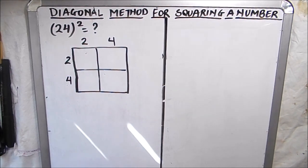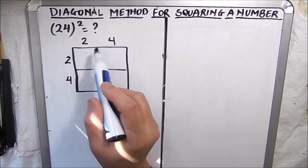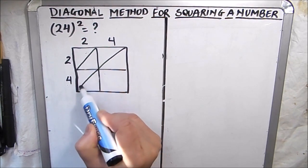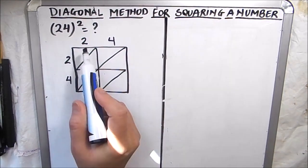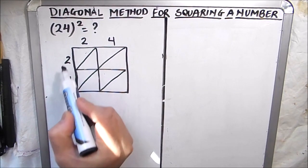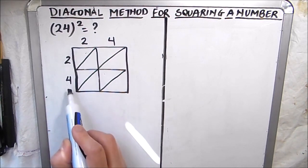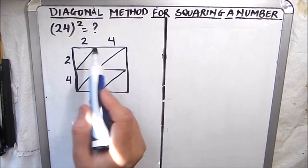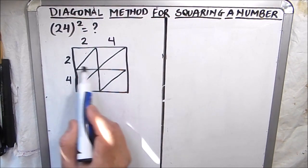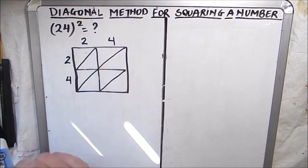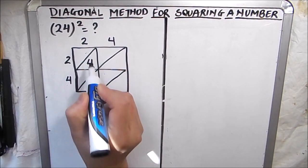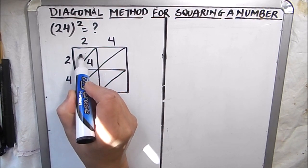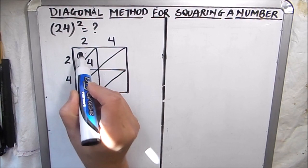Now we have to make the diagonal of each square, so we draw the diagonals. Next, multiply each digit on the left of the square by the digits on the top. Two times two is four, so we write 04 here — four is the units digit and the upper triangle is blank so we write zero, giving us 04. Two times four is eight, so we write 08.